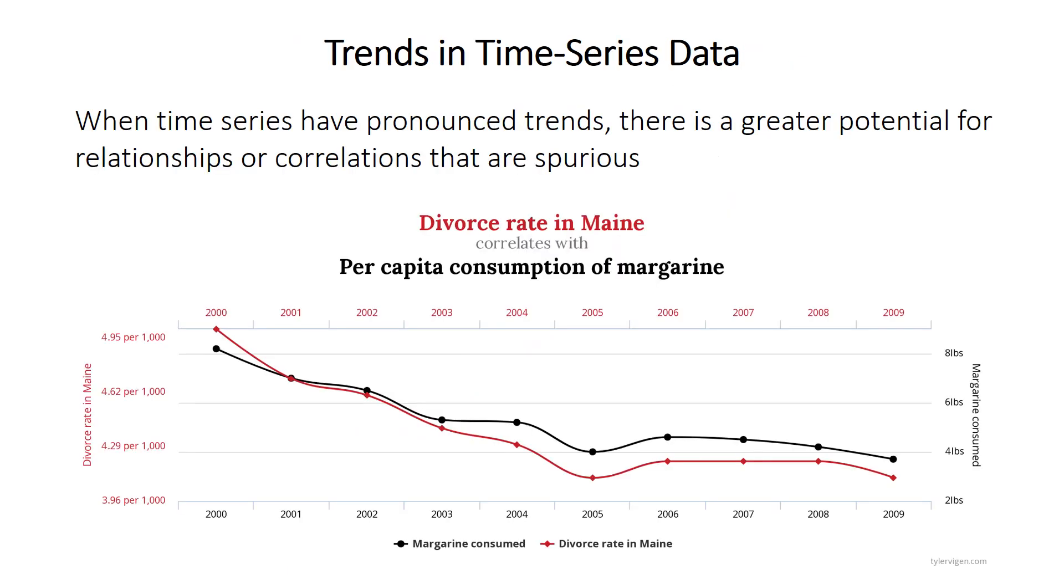But if you're comparing time series data that have strong directional trends, there's a very good chance that you're going to find a relationship or a correlation, but that relationship will be spurious. So that means it looks like there's a strong relationship, but it's only there because both are increasing through time or both are decreasing through time. Or you could have a negative relationship if one increases and the other decreases.